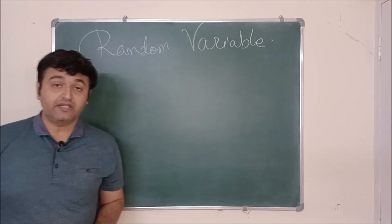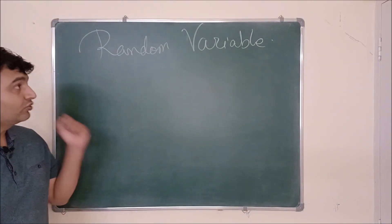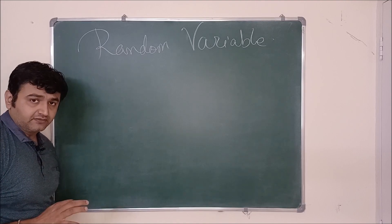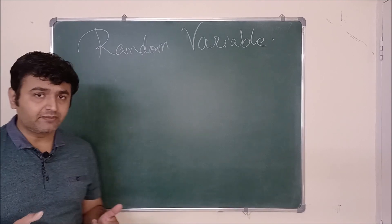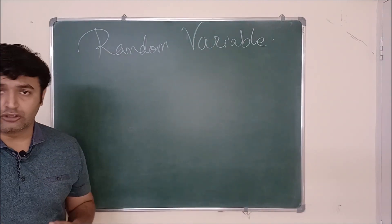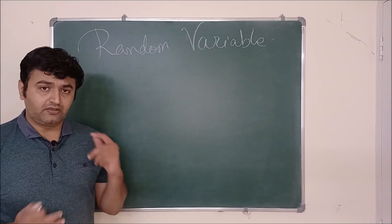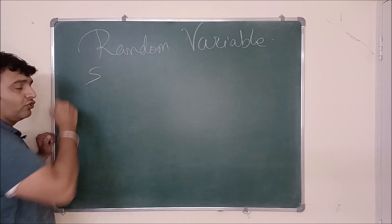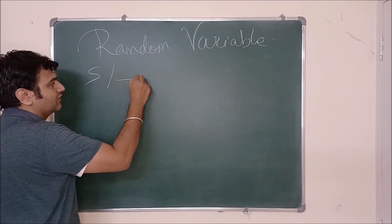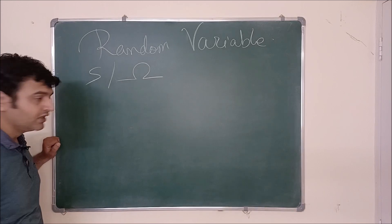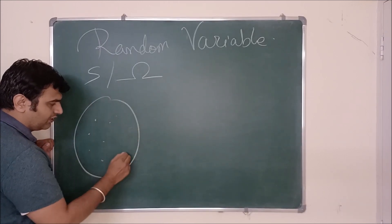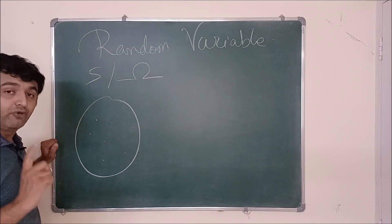Today we are going to talk about random variables. First, we do a random experiment — once we do a random experiment, we have all the possible outcomes, and we call that collection of all possible outcomes a sample space. The notation for this is capital Omega.